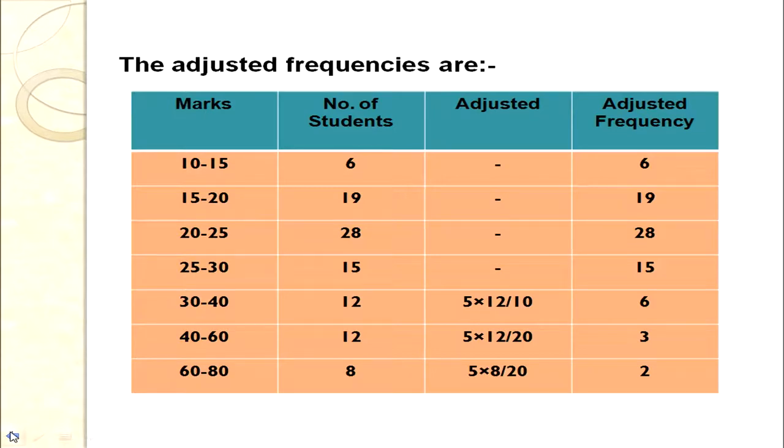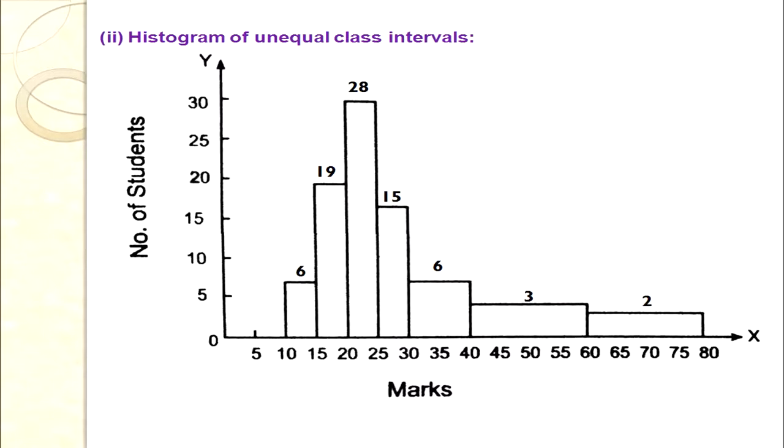Now we plot the adjusted frequencies. The important point here is that the width of the rectangles will change for classes 30–40, 40–60, and 60–80. In the histogram, for classes where frequency was adjusted, the width of the rectangle changes; for those not adjusted — 10–15, 15–20, 20–25, 25–30 — the width remains the same. The diagram is properly labelled: x-axis has marks, y-axis has number of students.